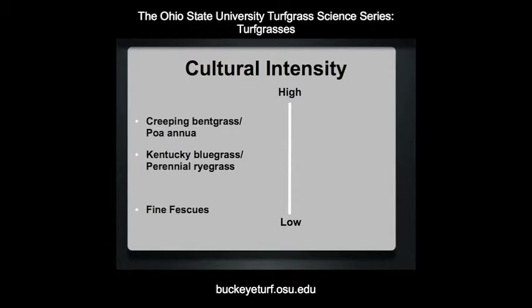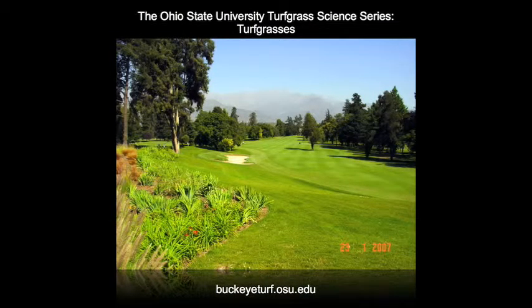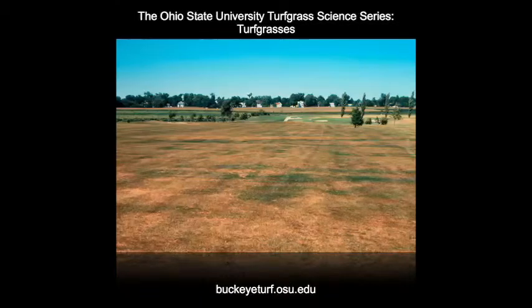The first cool season turfgrass discussed is Kentucky bluegrass or Poa pratensis. The adaptive range of Kentucky bluegrass is based on its good heat tolerance and excellent cold tolerance. On golf courses, Kentucky bluegrass is used on fairways, tees, and roughs.